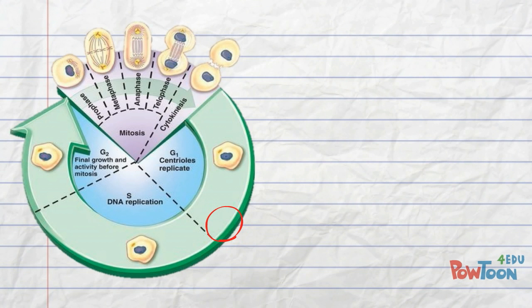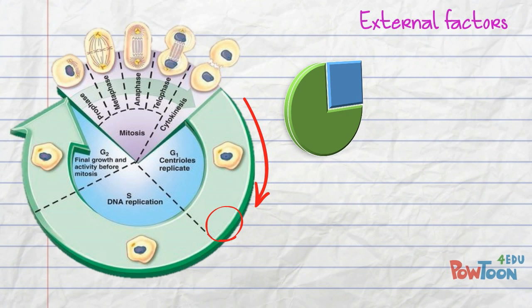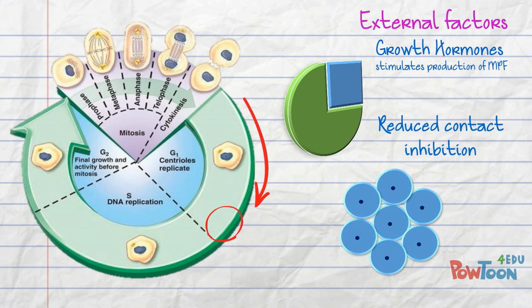Checkpoint one is slightly trickier because we need to incorporate external factors. As the cell starts the cycle, it starts to accumulate MPF, but it only does so when it receives external signals from things like growth hormones telling it's getting larger, or when there's reduced contact inhibition where there's space. The cell will only be able to reach its threshold if it receives enough of these signals.